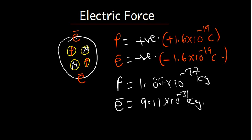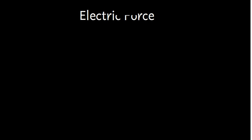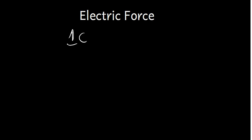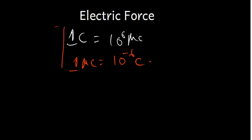Sometimes charges are given in microcoulombs, so we need to know how to convert. One coulomb equals 10 to the power 6 microcoulombs. Conversely, one microcoulomb equals 10 to the power negative 6 coulombs. This is the simple conversion you'll be using.